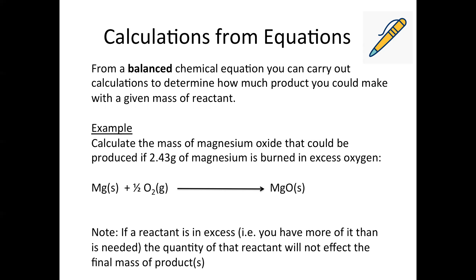If a reactant is described as being in excess, that means you have more of it than is required — there'll be some left over at the end. So the amount of that reactant doesn't affect the final mass of your product. In this case, the whole calculation is based off the amount of magnesium we have, because that's the reactant that's not in excess. You do more on this in Higher, where you look at limiting and excess reagents, but for National 5 you'll be told what's in excess and which reactant is the limiting one.